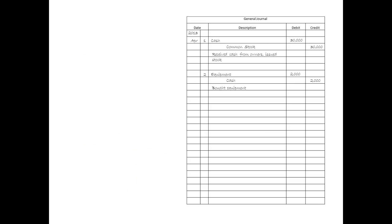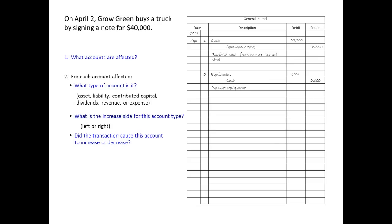On April 2, Grow Green bought a truck by signing a note. Accounts affected: truck and note payable. For the truck, what type of account is it? Asset. What's the increased side for an asset? Left. Did truck increase or decrease? It increased, so we'll use the increase or normal side — the left. For note payable, what type of account is it? Liability. What's the increased side for a liability? Right. Did our liability increase or decrease? It increased, so we'll use the increase or normal side — the right.